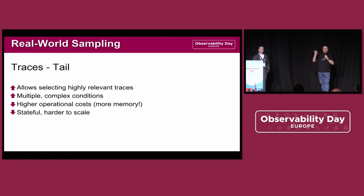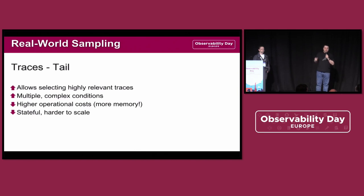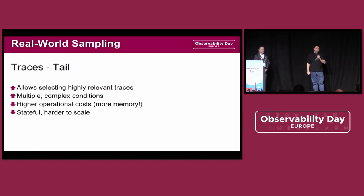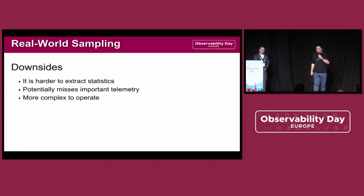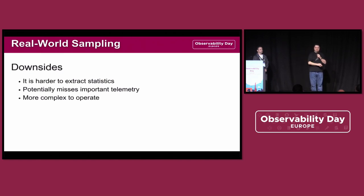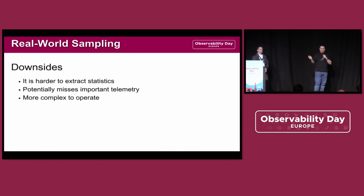The advantages are you can really pick the exact traces you want — for instance, 100% of errors. You can apply multiple and complex conditions, not just probabilistic strategies but combined probabilistic with errors and so on. However, it does come with even higher operational costs, you now have a stateful collector, and scaling stateful workloads is harder than stateless. Sampling has downsides too — you only do sampling when you need to because it's harder to make statistics after the fact if you're dropping data.